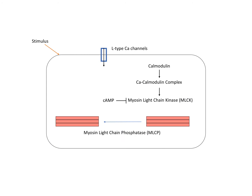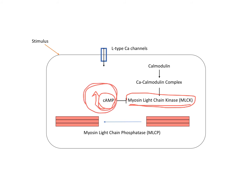There is also another important point: cyclic GMP inhibits myosin light chain kinase. So if cyclic GMP is increased in a cell, myosin light chain kinase is inhibited and smooth muscle cells cannot be phosphorylated and therefore cannot contract. Increasing cyclic GMP causes relaxation. This is important to distinguish smooth muscle cells from cardiac muscle cells.